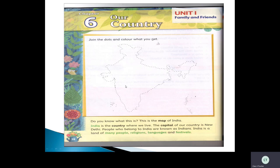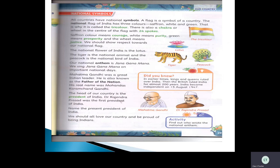I asked you to join the dots and color the flag. The first color is saffron, then white, then green. Now, all countries have national symbols. A flag is a symbol of a country — every country has its own flag. Our flag is called Tiranga, the tri-color.